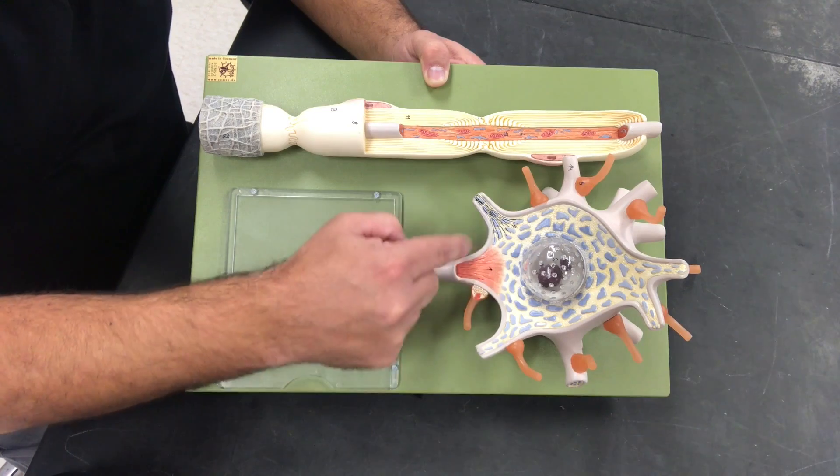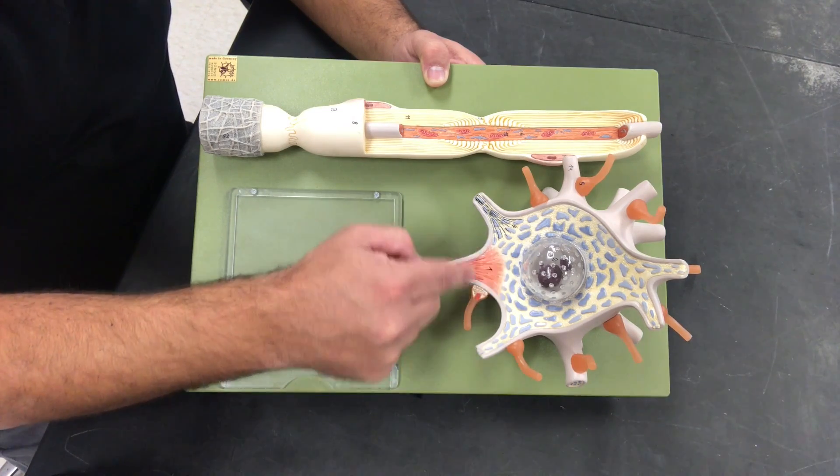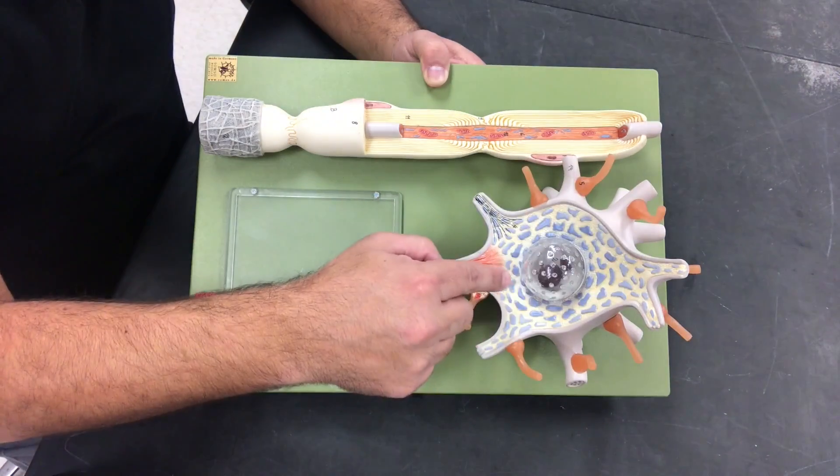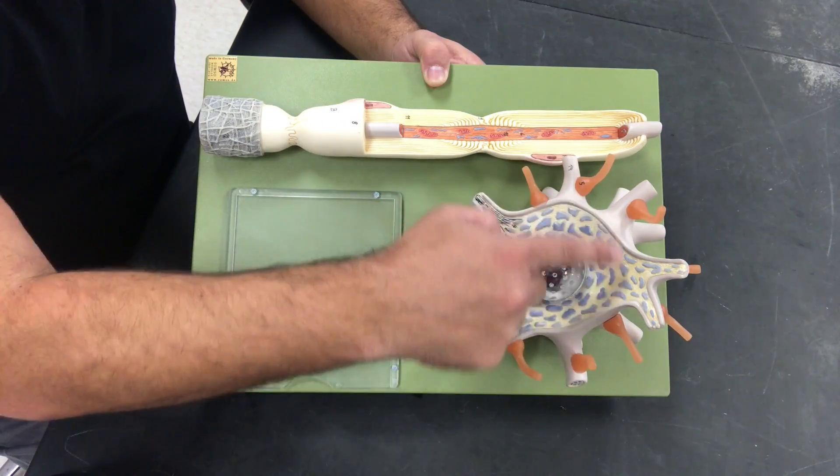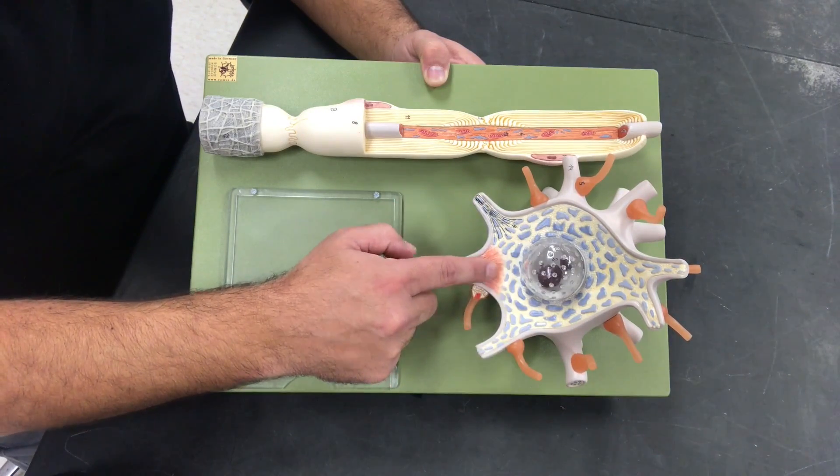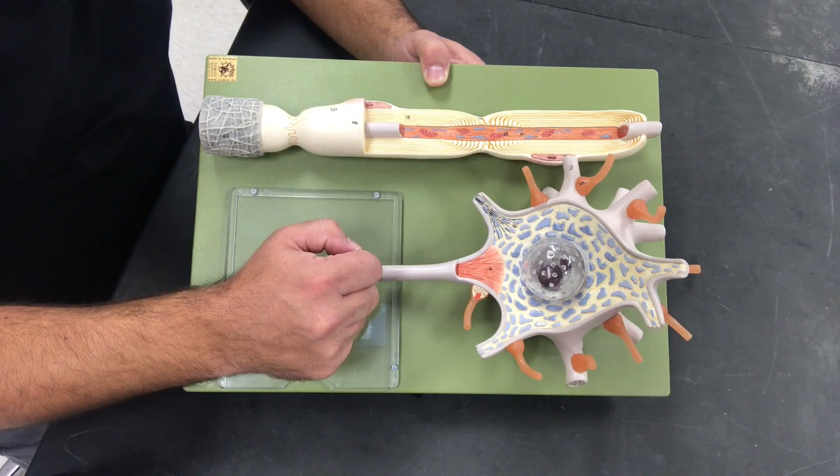This is where we would start and initiate our all-or-none principle of our action potential. Remember that here in our soma we're going to be utilizing graded potentials that would eventually sum to trigger our trigger zone right here at our axon hillock.